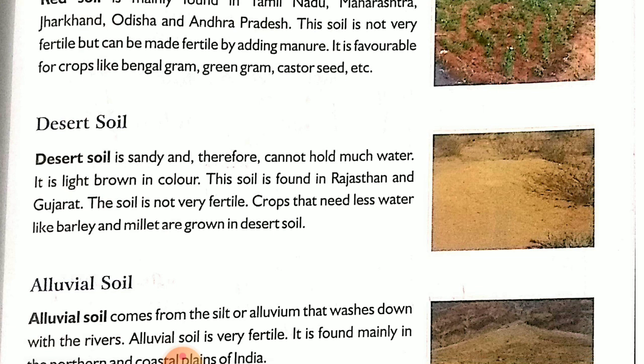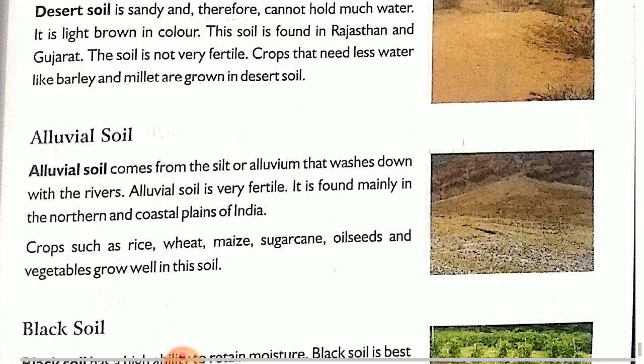Next is desert soil. This is a sandy soil and therefore cannot hold much water. The particles feel grainy like grains of sugar. That is why it cannot hold much water. It is light brown in color. This soil is found in Rajasthan and Gujarat and is not very fertile. Crops that need less water, like barley (jaw) and millets (bajra), can be grown in desert areas.